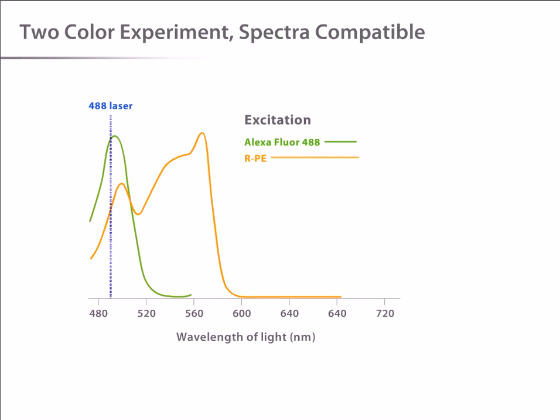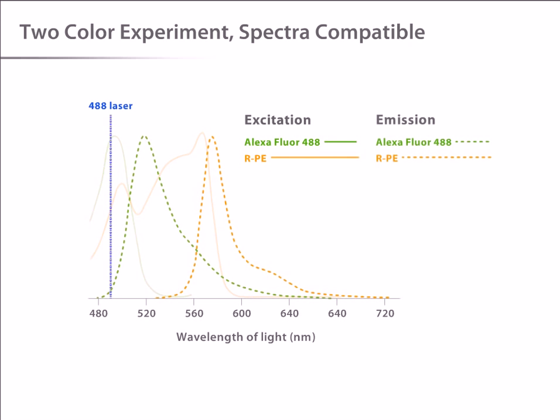For these two fluorophores, 488 nanometer light is an efficient excitation source. When excited with 488 nanometer light, you can see that the emission peaks for these two dyes are far enough apart so that discrete emission data can be collected. Compatible dyes, such as these, allow scientists to easily detect two colors from a single laser.